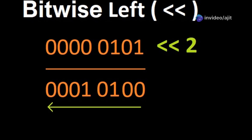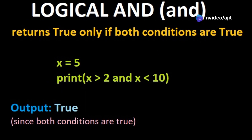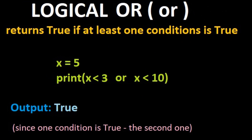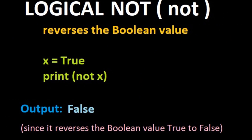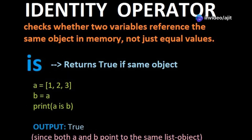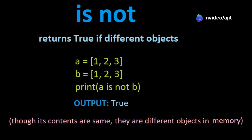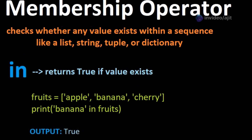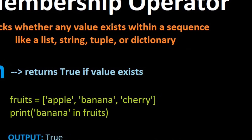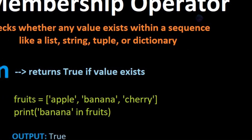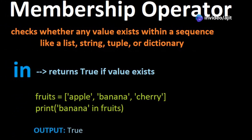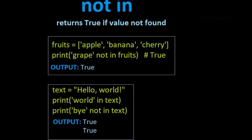Next we have the logical operators. Logical AND returns true if both statements are true — note that true means value 1, else 0. Logical OR returns true if one of the statements is true. Logical NOT reverses the result. Then come the identity operators: the IS operator returns true if both variables are the same object, and IS NOT returns true if both variables are different objects. Finally, we have the membership operators. The IN operator checks if a value exists within a sequence of values like in a list, string, tuple, or dictionary. NOT IN checks if a value is not within a sequence of data values.